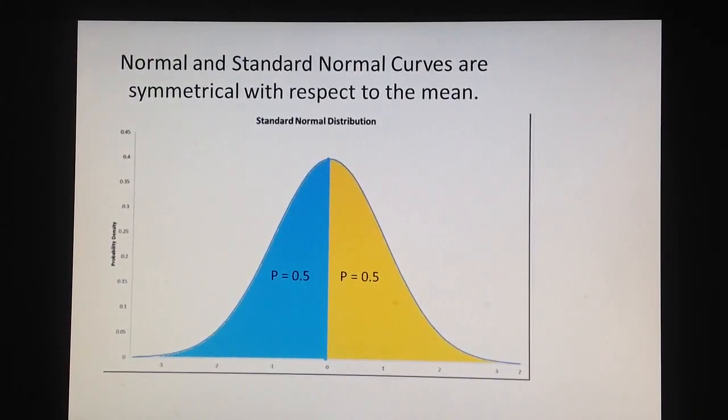Also, I would like to remind you that due to the symmetry, the probability that a randomly selected individual will have a score less than the mean is 0.5, and the probability that a randomly selected individual will have z-score more than the mean is also 0.5. You can see how perfectly symmetric the standard normal distribution is.